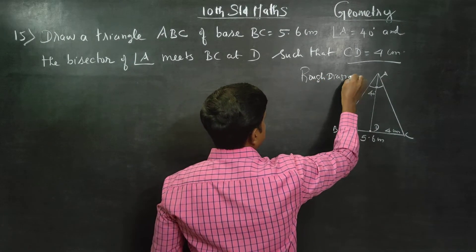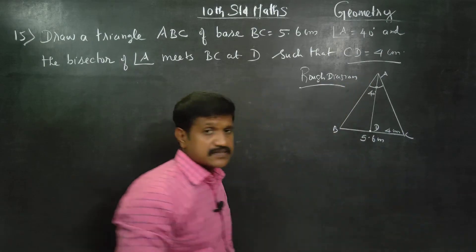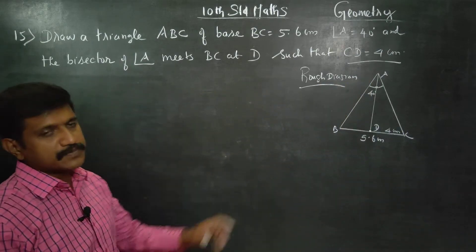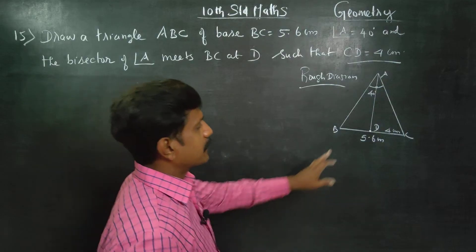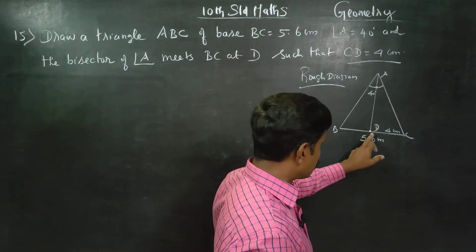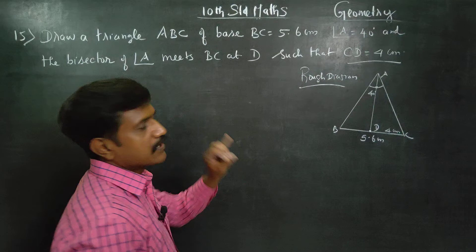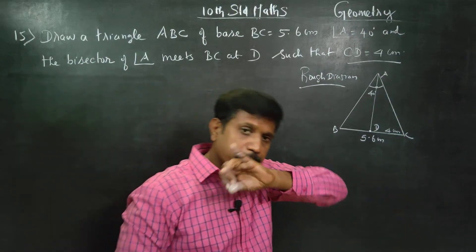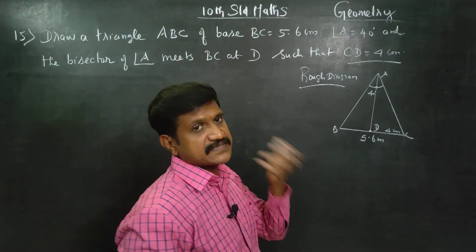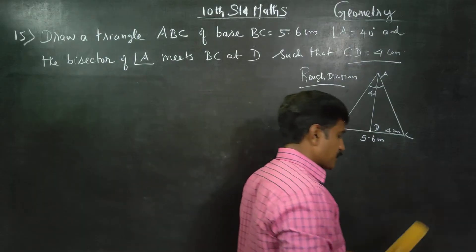This is your stage 1. Stage 1 rough diagram carries 2 marks. So don't miss the rough diagram. Draw the rough diagram. 40 degree divides into half meeting at D. CD measurement is 4 cm. This is the angular bisector. Now we'll construct the triangle. Step number 1.